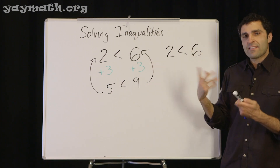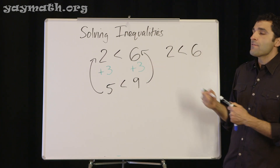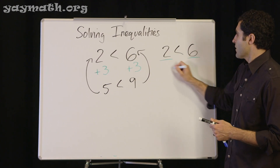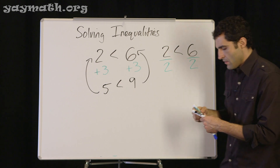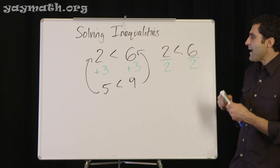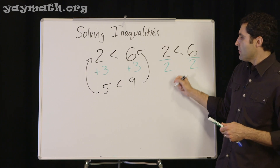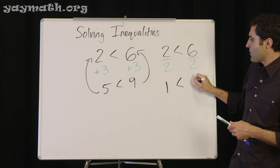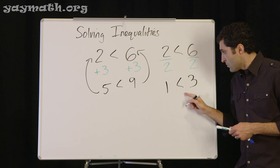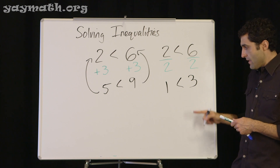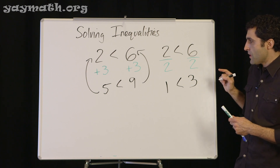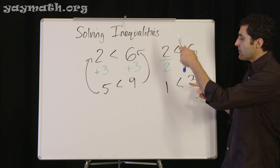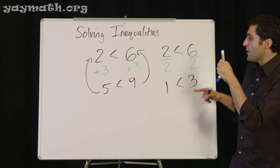What if you were to divide both sides? Two is less than six — let's divide both sides by two. Two divided by two is one, six divided by two is three. Is one less than three? Yes, it is. So we can add, subtract, multiply, and divide, and the inequality stays true — but there is one exception.